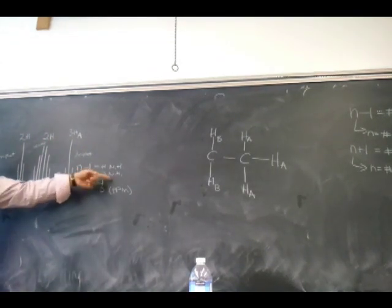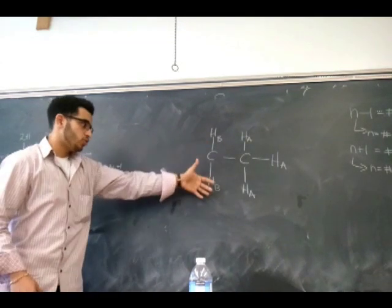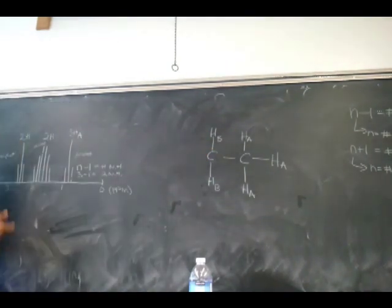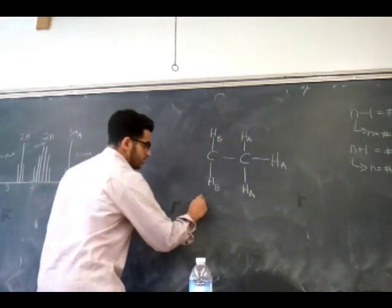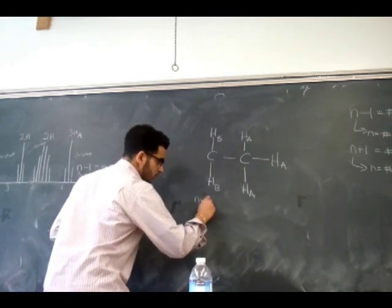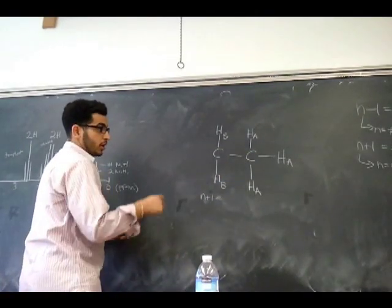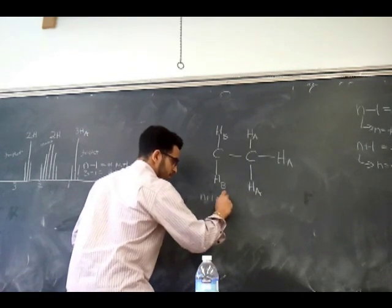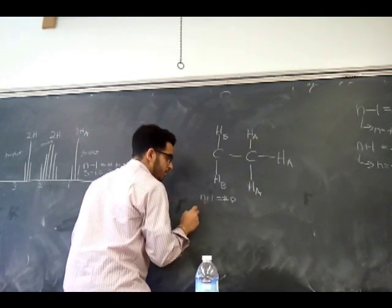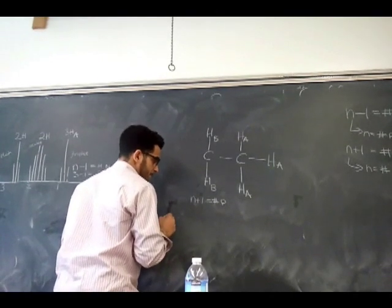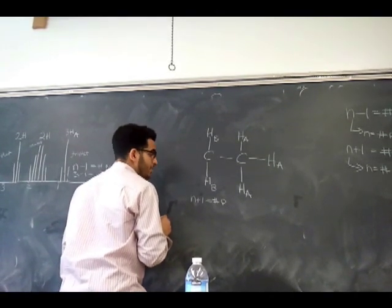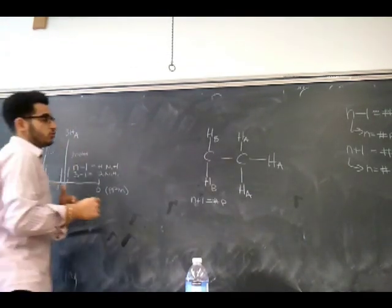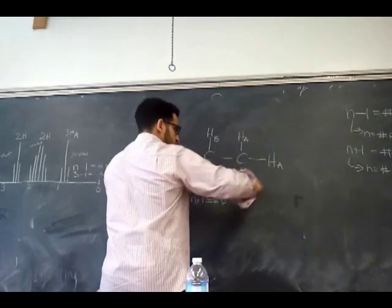Check it out. I'll use N plus one now. Because it tells us the number of peaks corresponding to these HB's. Because at this point, we know that HA refers to these peaks right here. Now, we want to know which peak corresponds to HB's. Based off this information here that is two neighboring H's, we're able to extrapolate and draw the structure here so far. But we don't know which peak these HB's refer to.